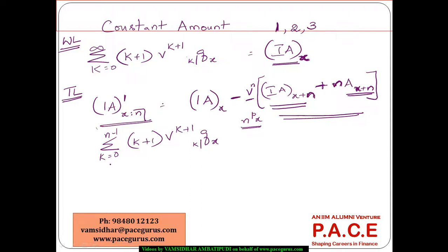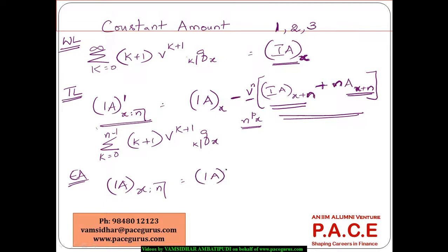For an endowment assurance with increasing benefits, (IA)_{x:n} consists of the death benefit component — the term increasing assurance (IA)_{x:n} — plus the maturity benefit. The maturity benefit is simply n·A_{x+n}, being the amount n received at the nth period if the person is alive at that point.